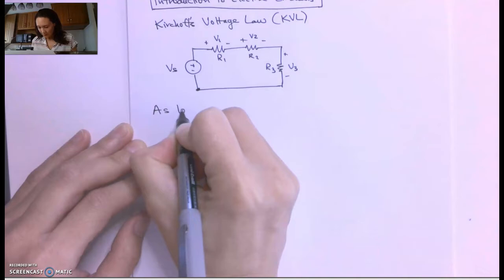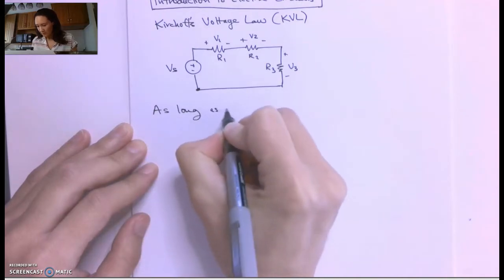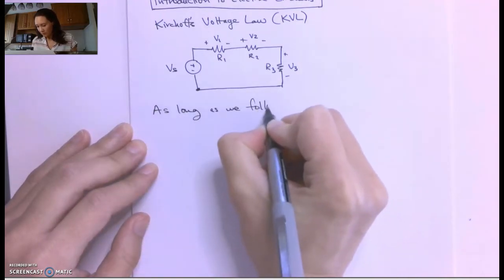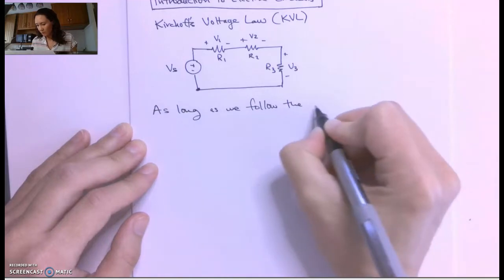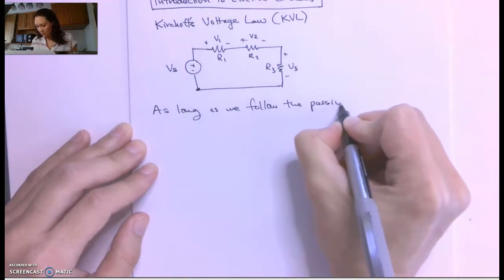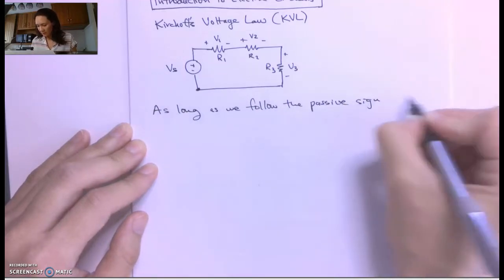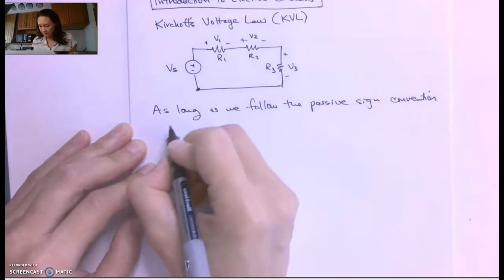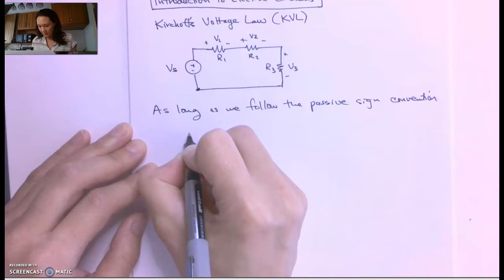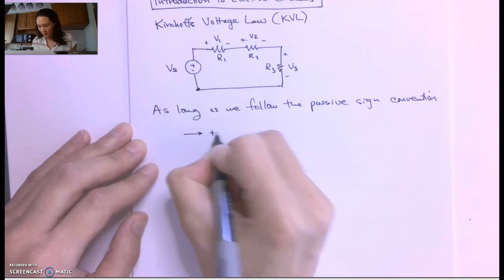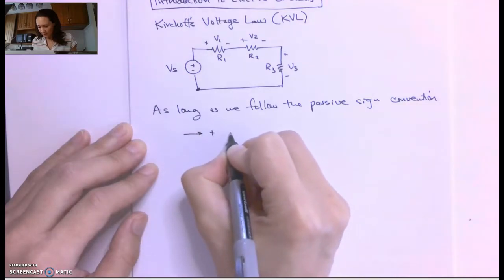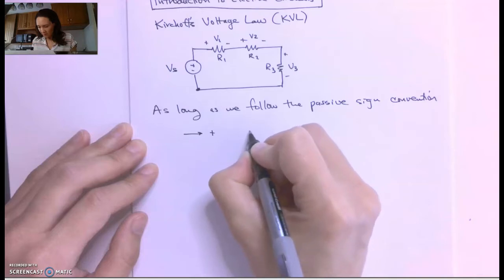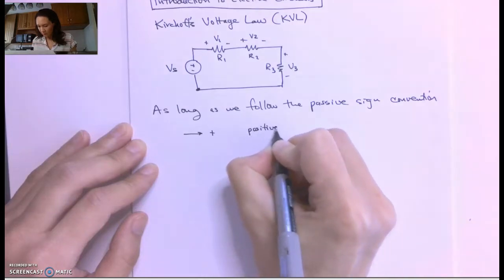Following the passive sign convention, if we go into the positive side, then that is going to be a positive voltage.